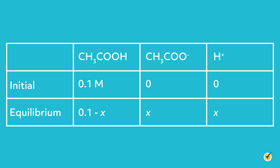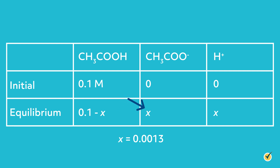To simplify our calculation, we can assume that x is much smaller than 0.1, meaning that we assume very little acid will dissociate, and then solve the equation to show that x equals 0.0013. This means that of the original 0.1 molar of acetic acid, 0.0013 molar dissociated into acetate and hydrogen ions — or about 1.3%. Note also that our assumption that x, 0.0013, would be much smaller than 0.1 was true.